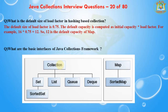The next question is: what are the basic interfaces of the Java Collection Framework? Java Collections Framework provides a well-designed set of interfaces and classes that support operations on a collection of objects. The most basic interfaces are: Collection, which represents a group of objects known as its elements; Set, which is a collection that cannot contain duplicate elements; List, which is an ordered collection; and Map, which maps keys to values and cannot contain duplicate keys. Other basic interfaces include Queue, Deque, SortedSet, and SortedMap.